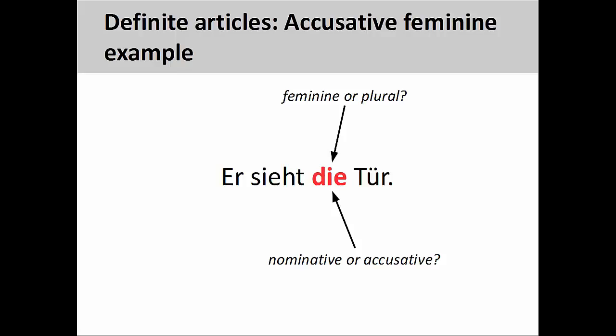For example, the sentence you see on the screen: Er sieht die Tür — He sees the door. The feminine definite article Die, which is in the accusative case, looks very similar to the nominative form, as well as to the plural nominative and accusative forms. How do I know which is which?